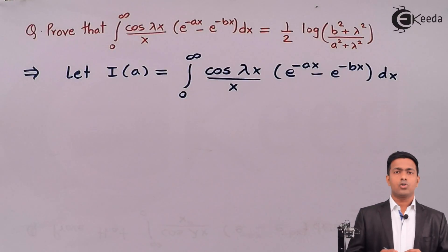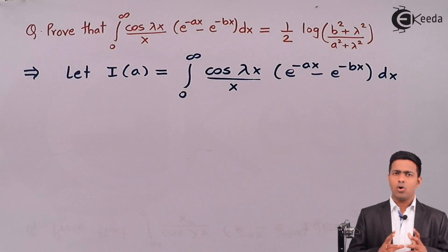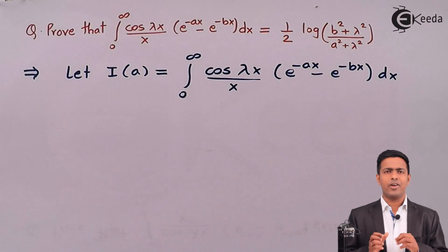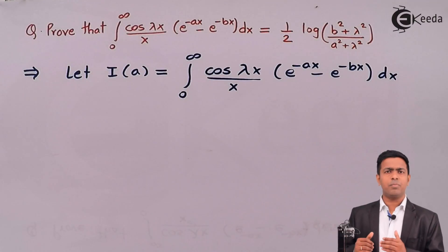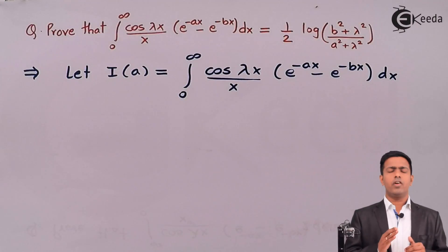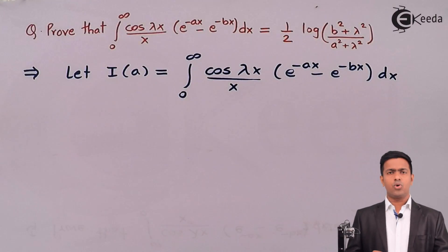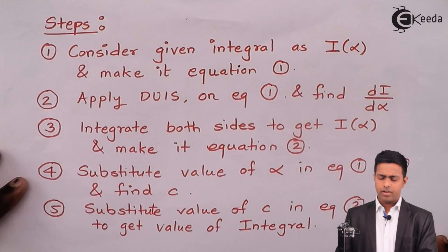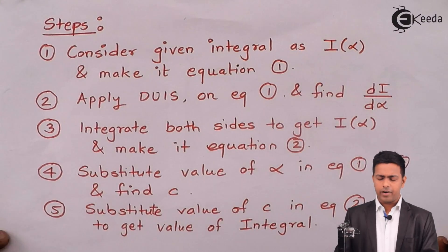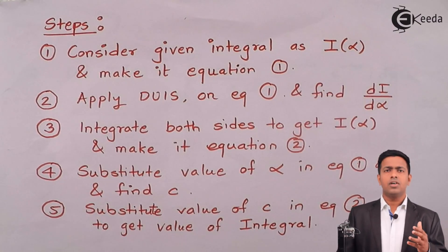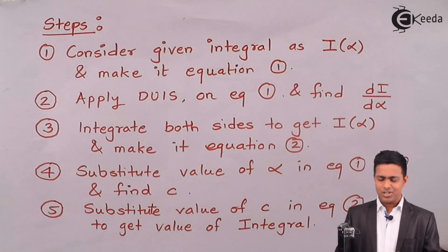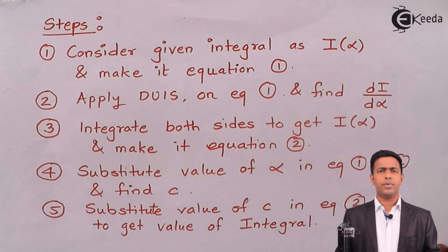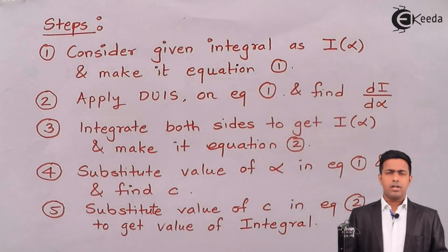Whenever we have multiple parameters, how should we apply the rule of DUIS to get the value? The trick is simple — whatever steps we followed using DUIS for a single parameter, we follow similar steps here. We had followed five steps to solve the numericals based on single parameter. The first step was: consider the given integral as I(α), where α is a parameter, and make it equation number one.